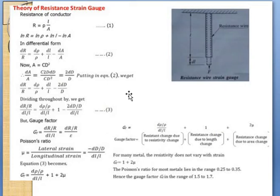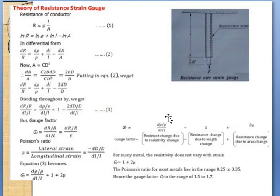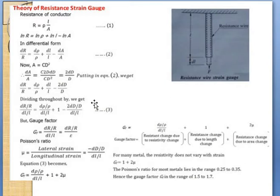The final gauge factor equation becomes: Gauge Factor = dρ/ρ divided by dL/L + 1 + 2μ. In words: the gauge factor equals resistance change due to resistivity change, plus resistance change due to length change (the factor 1 comes from dL/L divided by dL/L), plus resistance change due to area change (the 2μ term, involving both diameter and length).